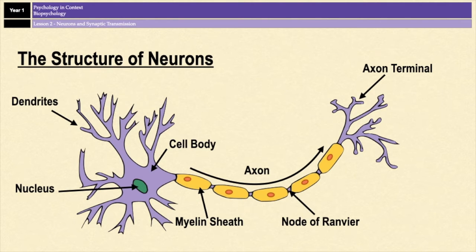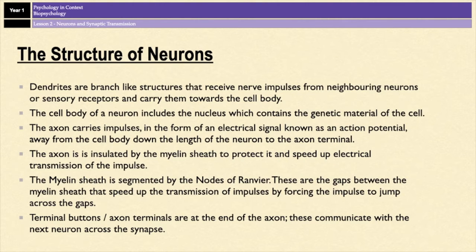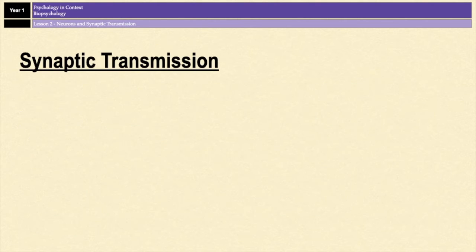We will look at the synapse in more detail shortly. That is the basic structure of a neuron and the basic information you need to know. For A-level psychology, you don't need to know it in any more detail than what's been covered here. You can pause the video now to take down any notes on the structure of neurons. That brings us to part two of the video: synaptic transmission.